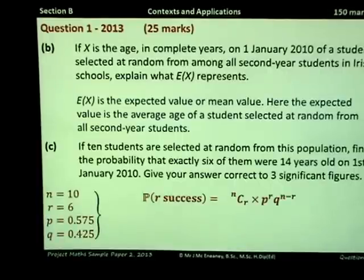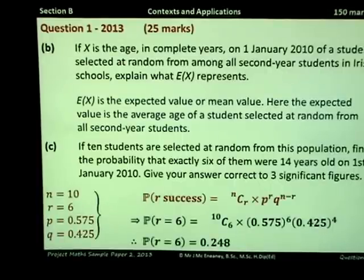If we substitute these values into this formula, and then using our calculator, this works out as 0.248 to 3 significant figures.